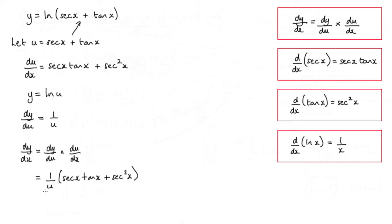Now 1/u—well, now we can substitute back in for u. So we're going to get (sec x tan x + sec² x) all over u, and u is sec x + tan x.